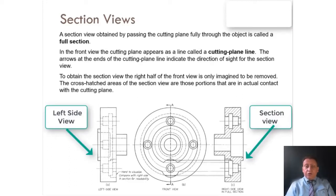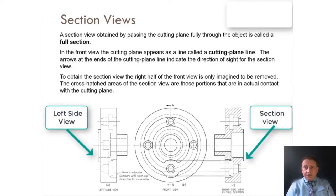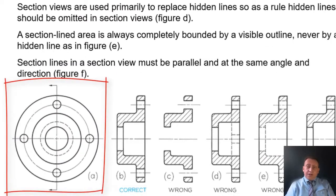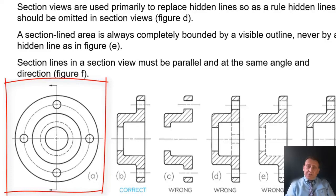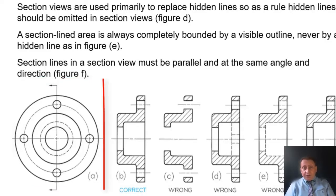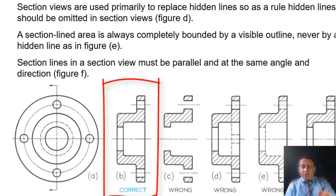Here we are showing a normal top or front view. To the right side is the section view, and to the left side is the normal view with hidden lines. See how complex it is with hidden lines — but with section view it is more clear. Section view B is the correct one for this front view. I want you to compare C, D, E, and F with B, because B is the correct result of the proper cutting plane line sectioning.